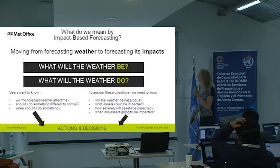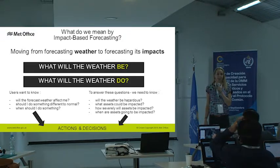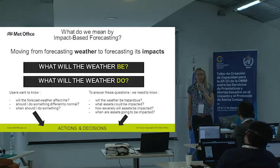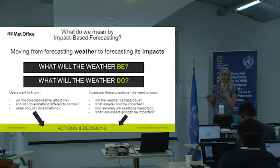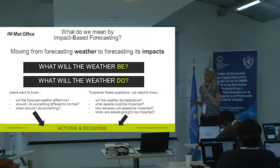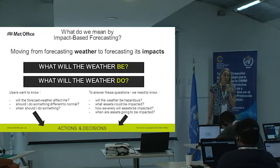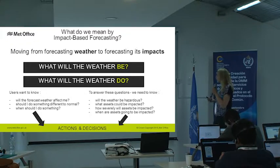What do we mean by impact-based forecasting? As many of you know, we have predominantly as meteorologists been interested in telling people what the weather is going to be — is it going to rain, is it going to be windy — and we're eager to tell them how much rain and how windy. But actually what the user wants to know is how does this affect me, and do I need to do something different?